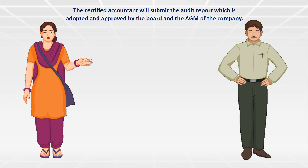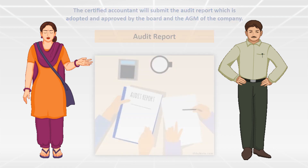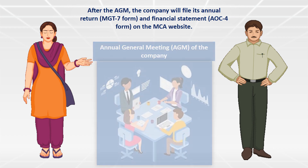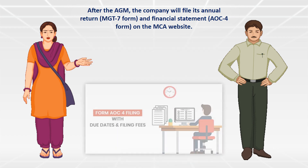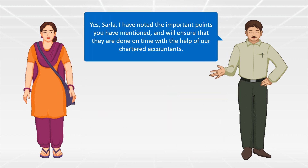The certified accountant will submit the audit report, which has to be approved by the members during the AGM of the company. After the AGM, the company will file its annual return MGT-7 form and financial statement AOC-4 form on the MCA website. I have noted the important points and will ensure that they are done on time with the help of our chartered accountants.